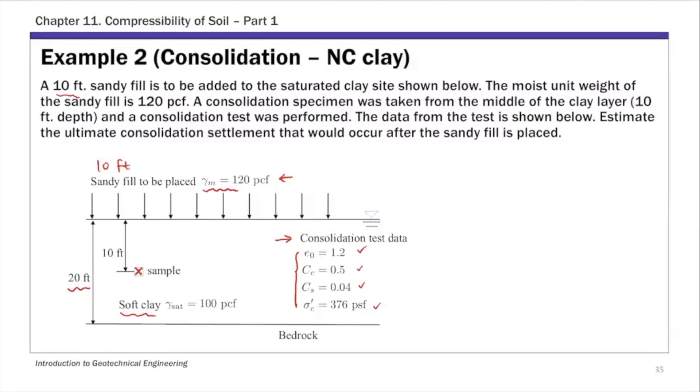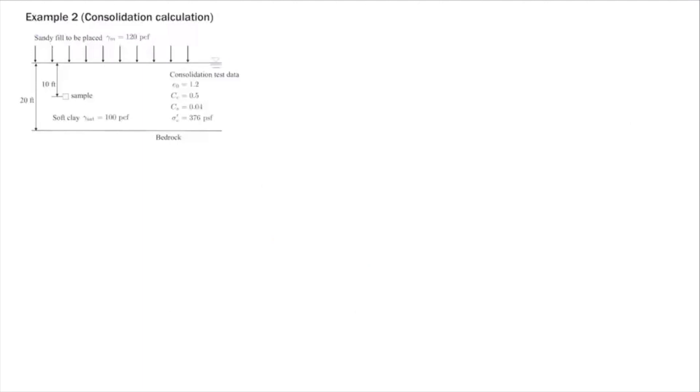To estimate the primary consolidation settlement, the first thing is to calculate these three stress values. The initial stress at the middle of the clay layer—at the sampling location. At the middle of this clay layer, we know the initial effective stress. This is the initial value before you put that sandy fill on top, before that sandy fill is put on top.